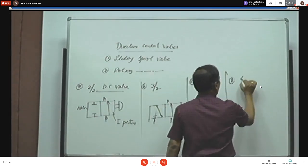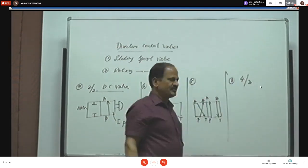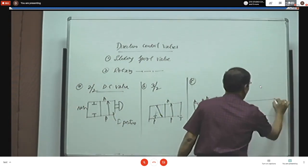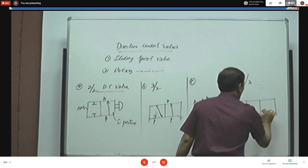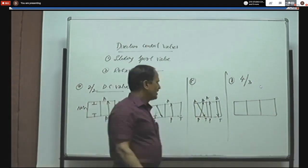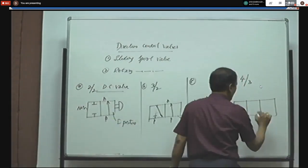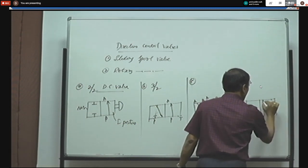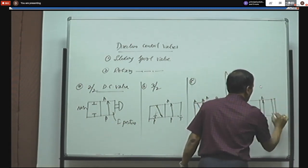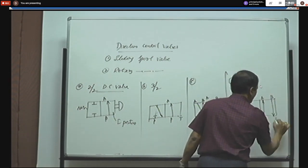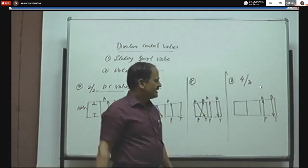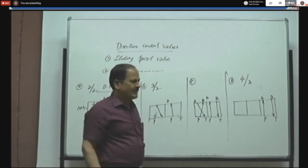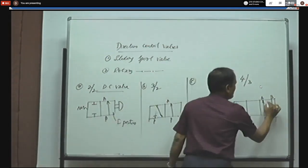In the case of the 4x3 DC valve, there are three positions, represented by three boxes. In the first position, P is connected to A and B is connected to T — the extension of a cylinder takes place. In the second position the direction of flow is reversed: fluid flows from P to B and returns from A to T.